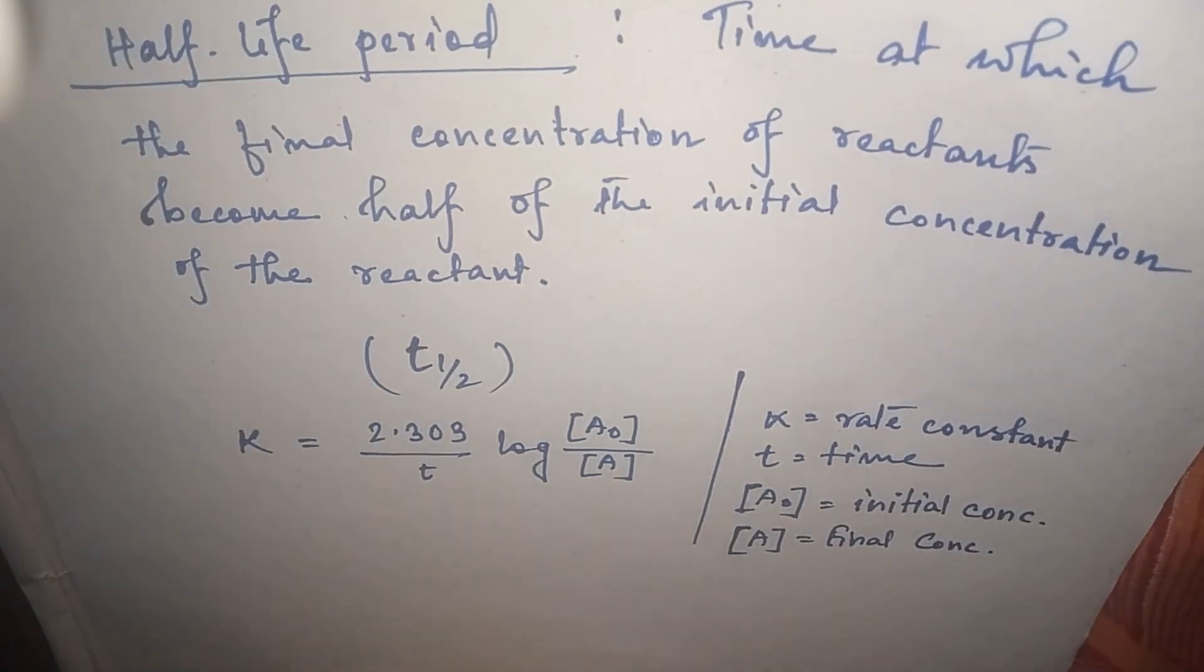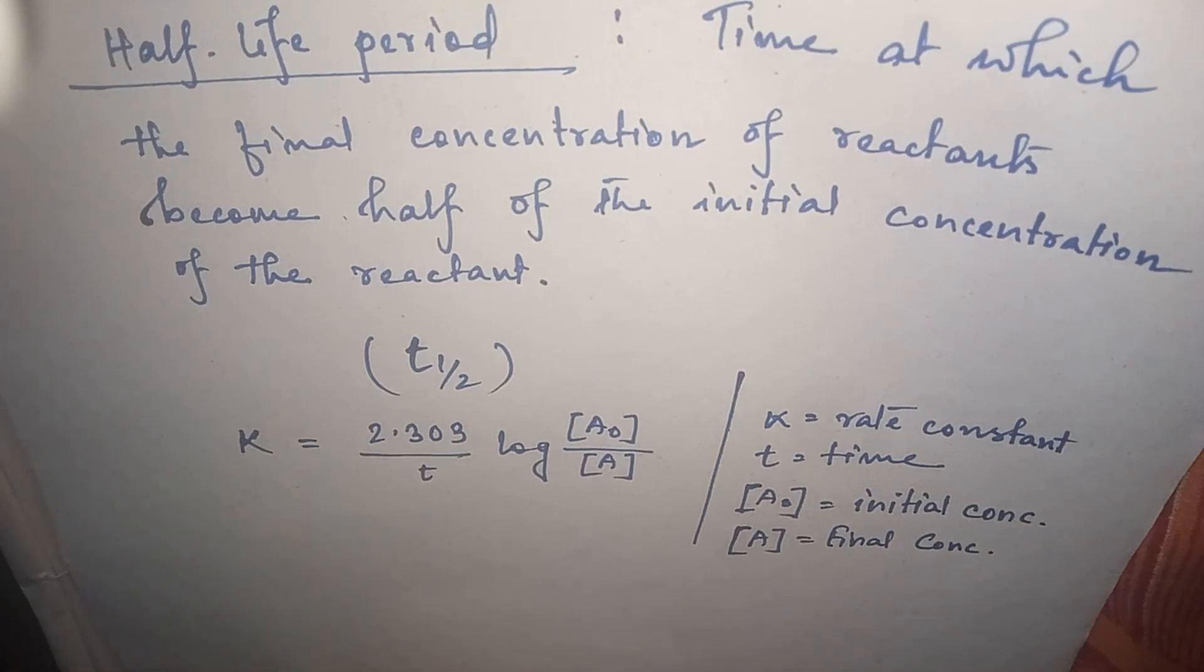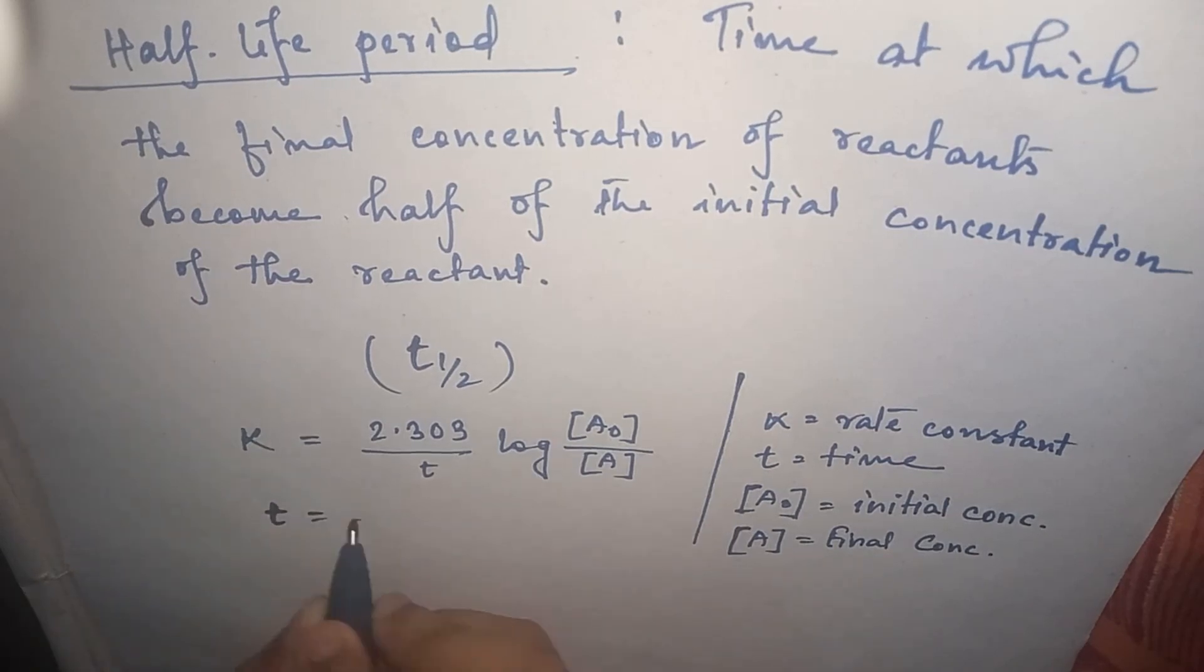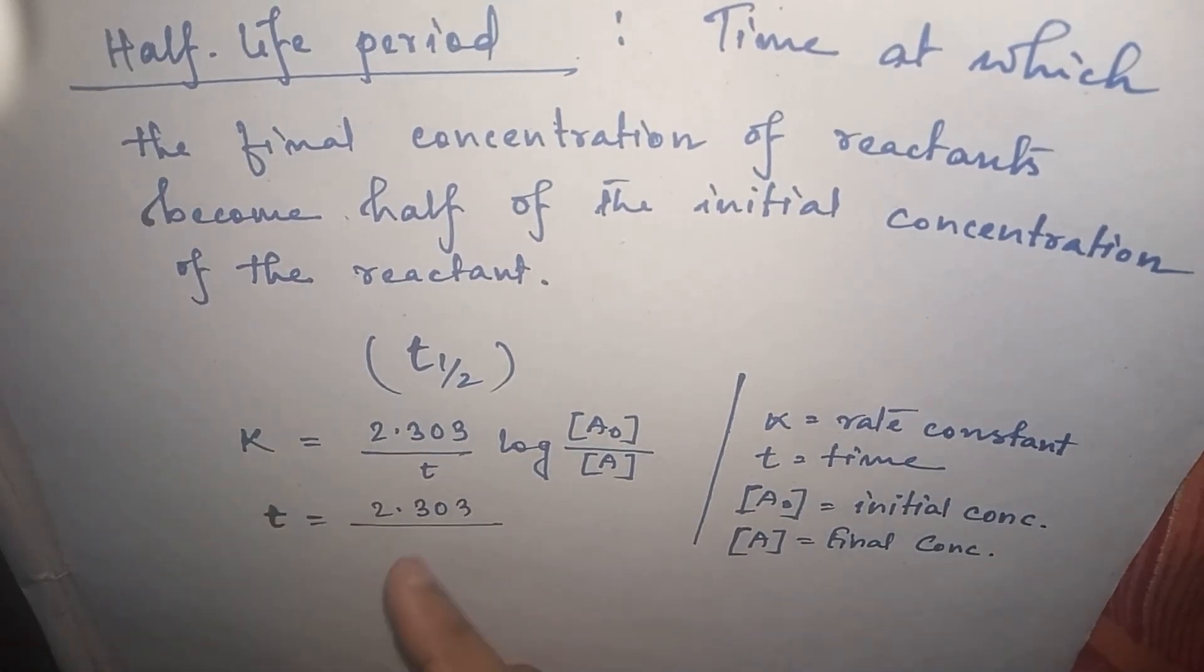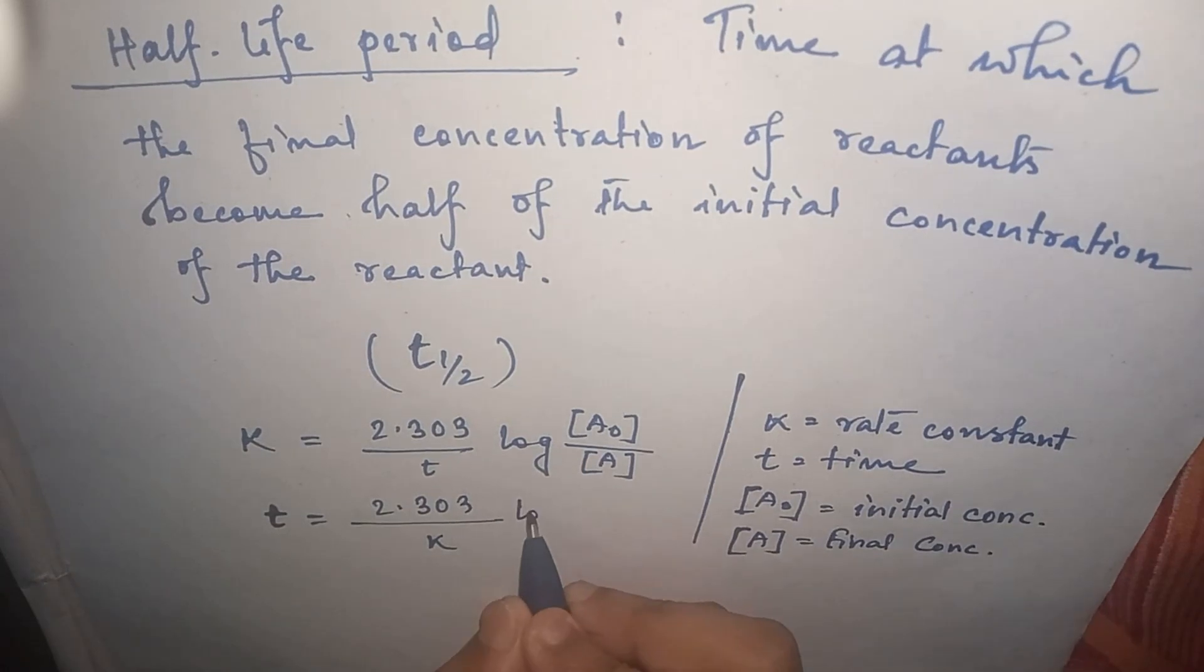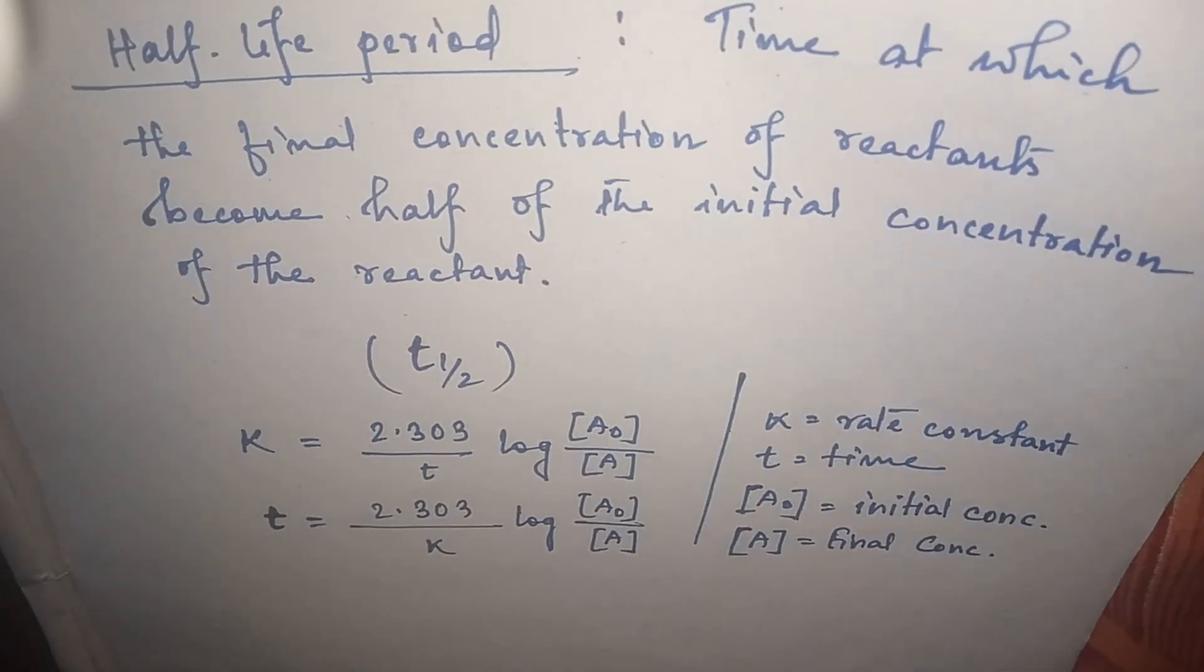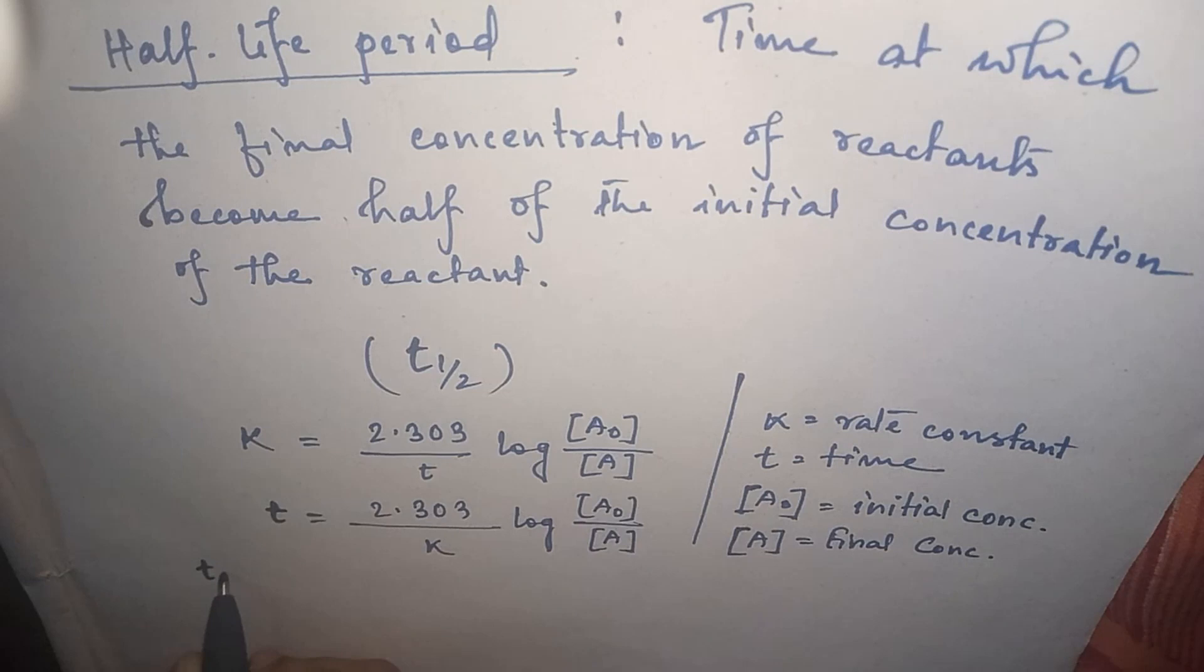Now let's do one interchange between K and T, so we can also write T equals 2.303 by K log of [A₀] upon [A]. Now see, when the time is T half...